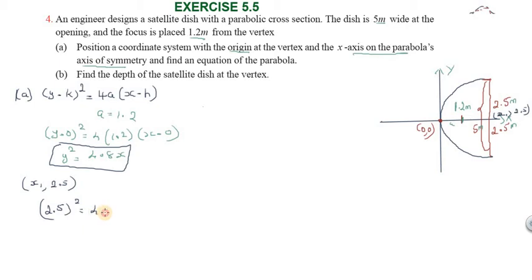(2.5)² = 4.8x. So 2.5 squared equals 4.8x. Therefore, x = (2.5)²/4.8 = 6.25/4.8.